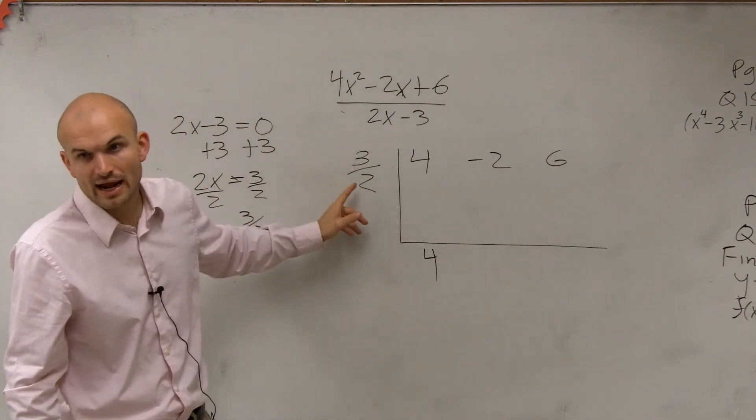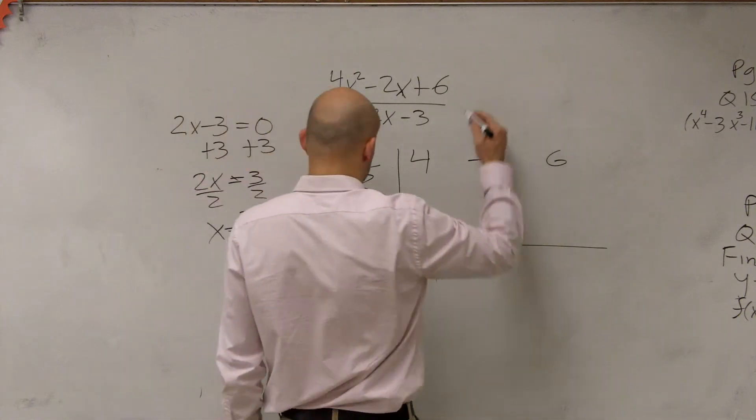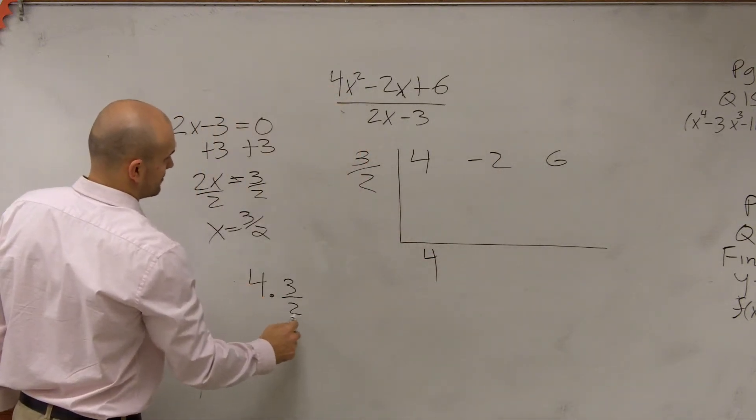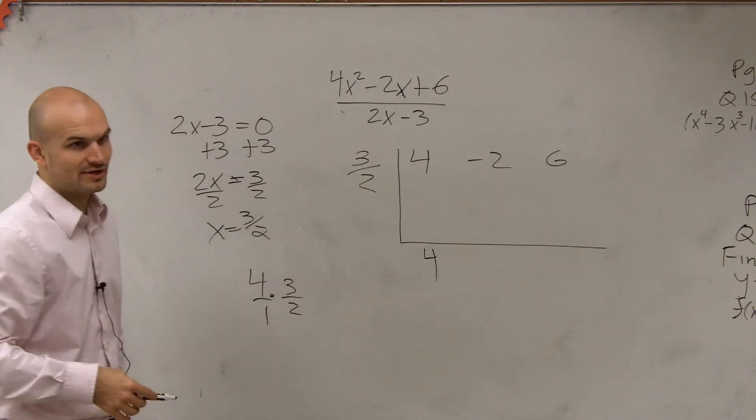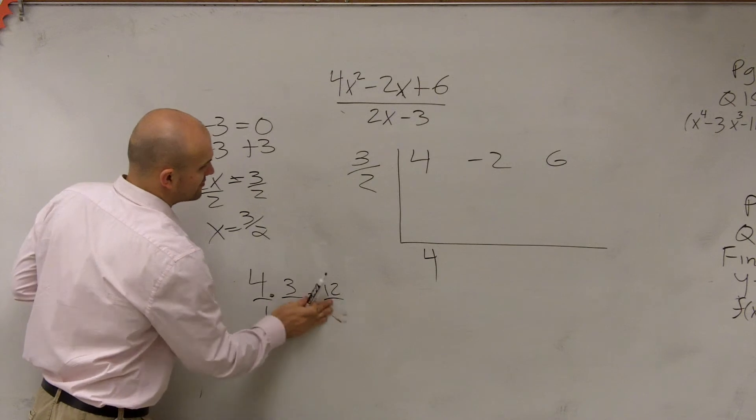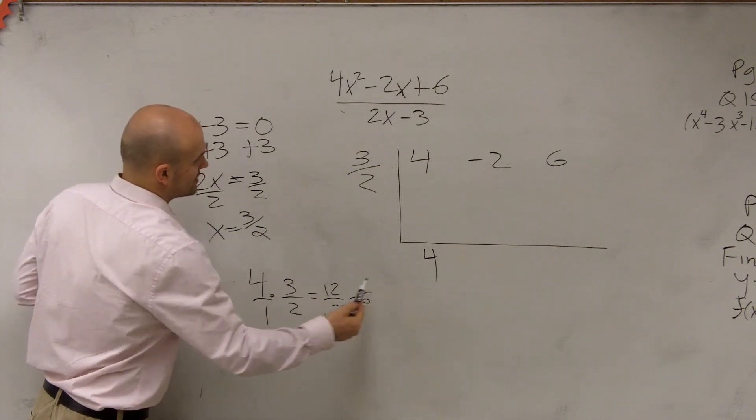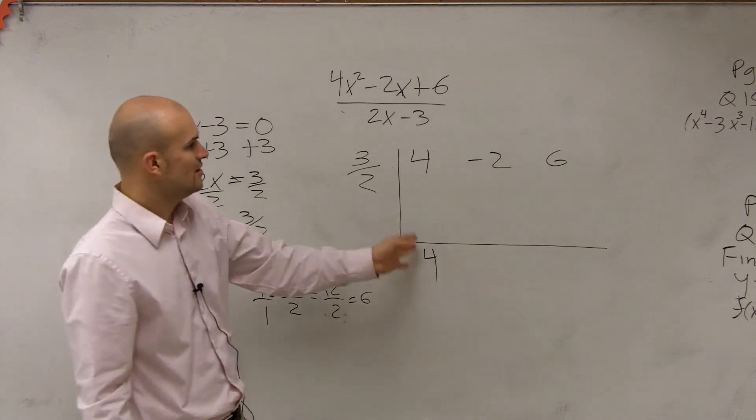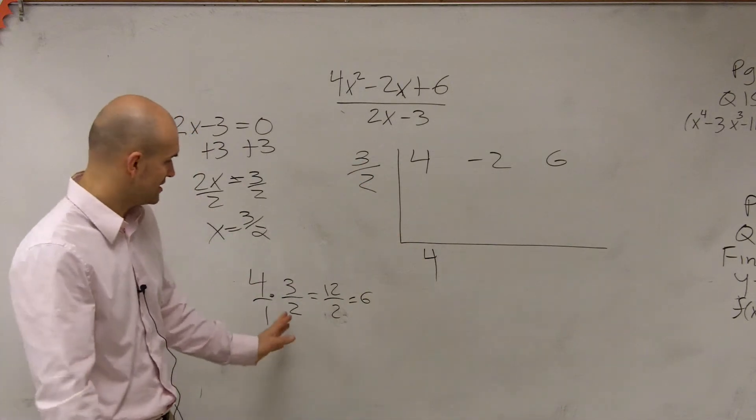Now, 4 times 3 halves. So if you guys remember multiplying fractions, this isn't as bad as you guys want to make it. 4 times 3, you just multiply across. 12 divided by 2, which equals 6. Right? 4 times 3 halves is going to give you 6.